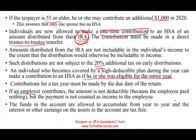Once you have money in the account, you are allowed to accumulate it from year to year. The interest and earnings are again tax-free. You can keep the money there, earn interest, and that's the beauty of it — the money goes in tax-free, the earnings are tax-free, and as long as you use it for medical expenses, distributions are tax-free as well.